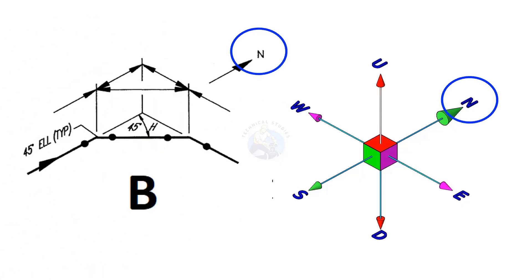In this drawing, the piping goes to the north direction, turns and travels to the north-east 45 degrees.